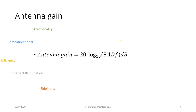To reduce side lobes, we consider the front-to-back ratio. The front-to-back ratio is the ratio of forward power to backward power. Forward power is the boresight power, and backward power is the power radiated in the side lobes. We need a high front-to-back ratio so that the antenna performs better for microwave communication and is suitable for longer hops.